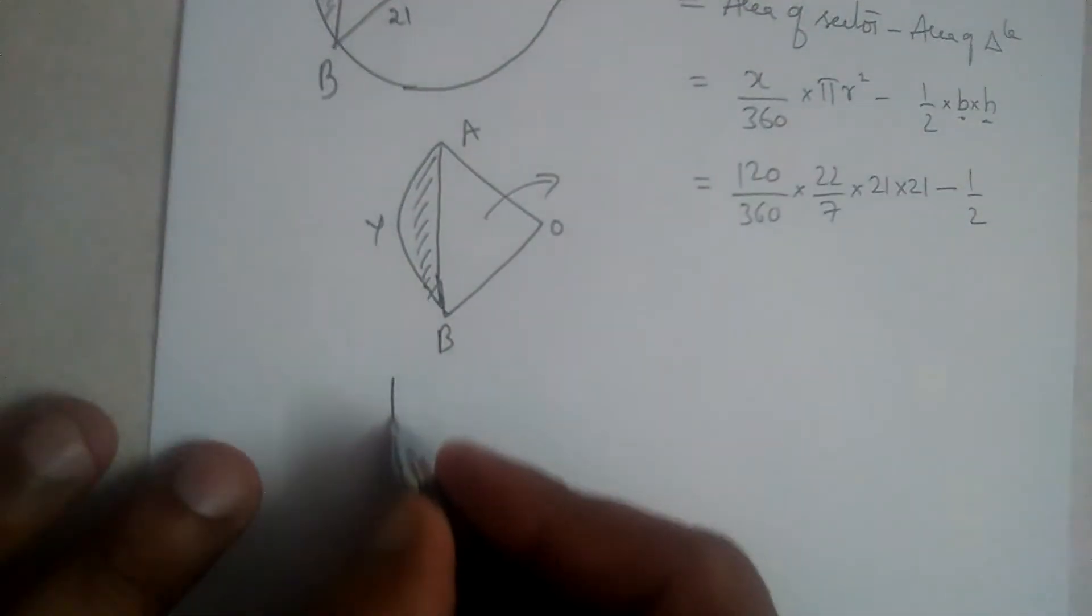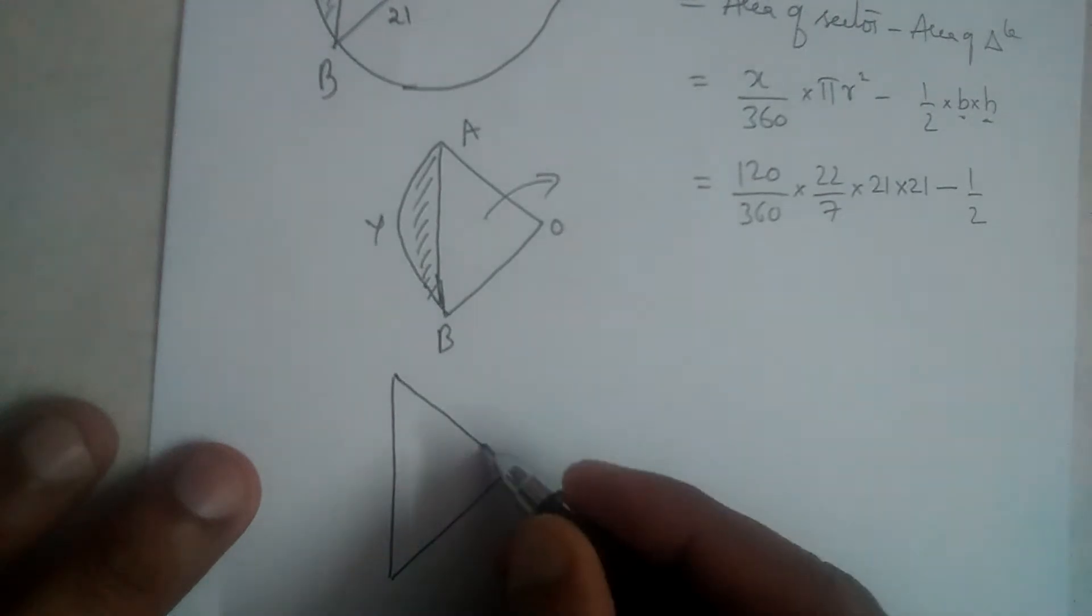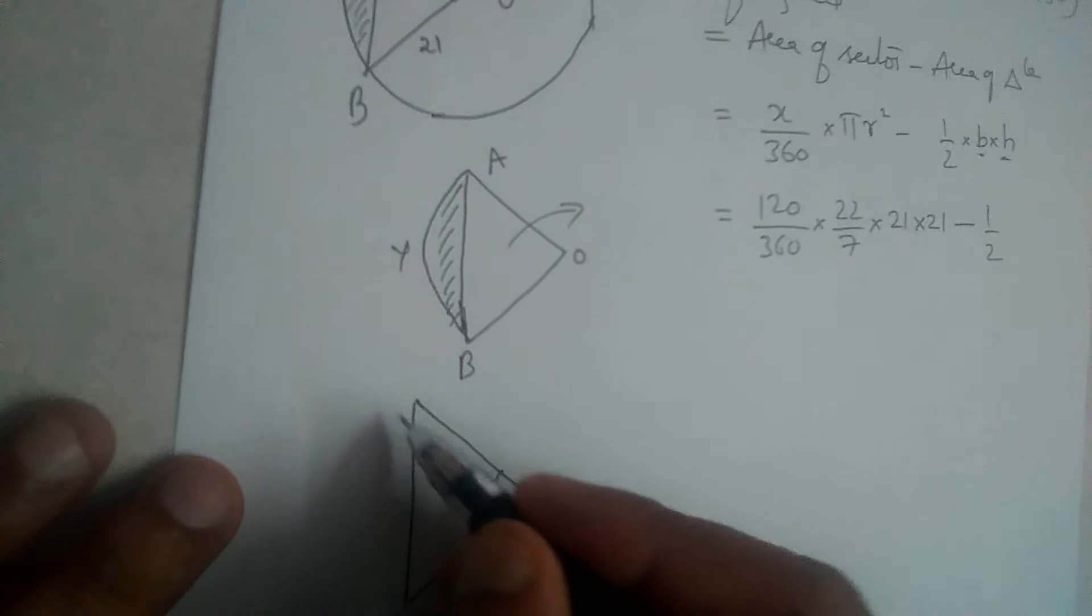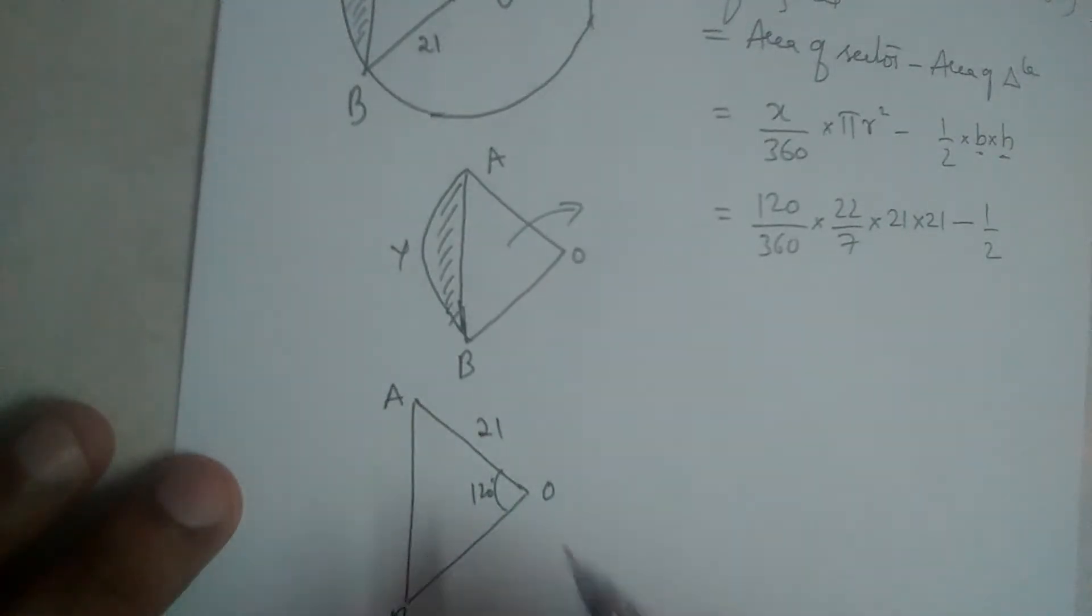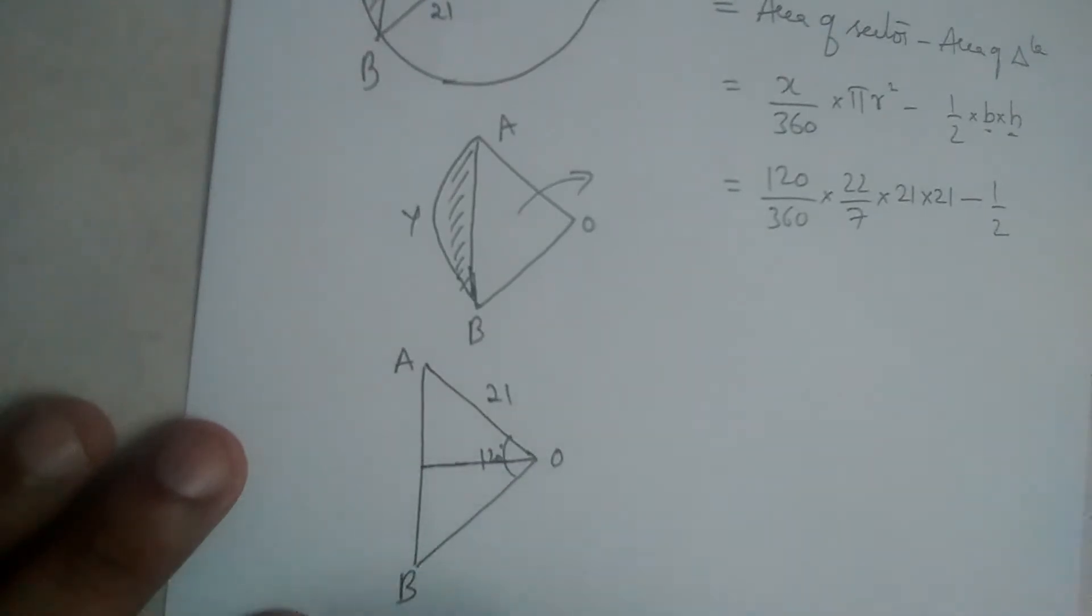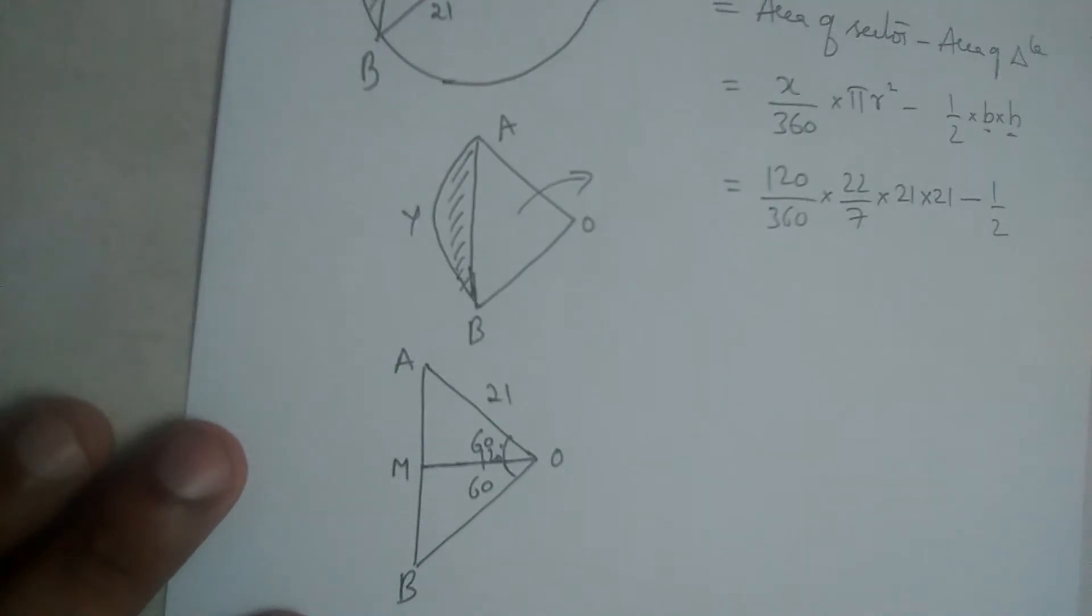We should use trigonometry concept here. This is 120 degrees given, and this is A, this is B, and this is 21, and this is O. Now, let us drop a perpendicular from O on AB. Let this be M, so each angle will be 60 degrees now.